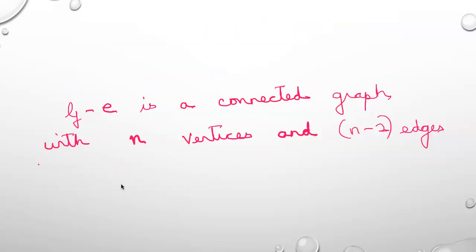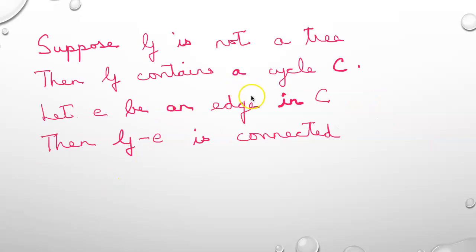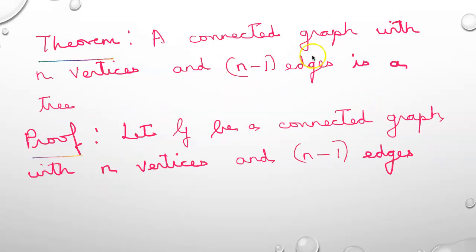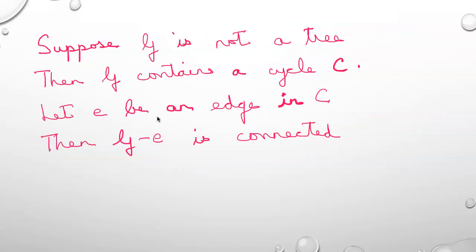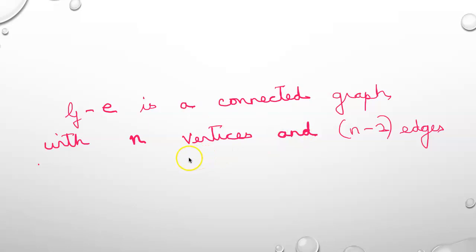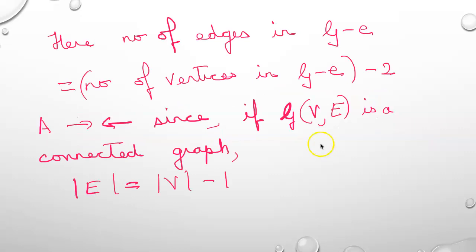To recap the proof: we assume G, a connected graph with n vertices and n-1 edges, is not a tree. This leads to G-e being a connected graph with n vertices and n-2 edges, which contradicts the fact that a connected graph with n vertices must have n-1 edges. So we get a contradiction and the proof is complete.